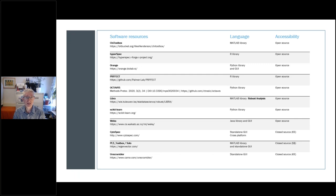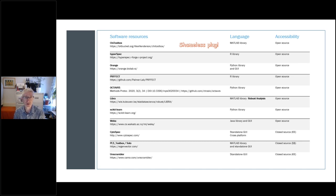Here is a list — certainly not a complete list — of data analysis software, most of which is free and open source, covering platforms including MATLAB, R, Python, and Java. I'm putting in a shameless plug for my own toolbox, which is in MATLAB and downloadable from this site. I believe you have the option to just click on a screen capture to get all those links.